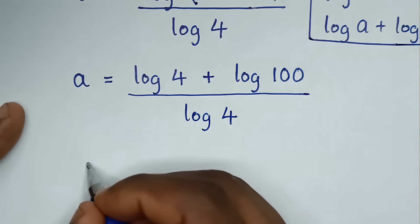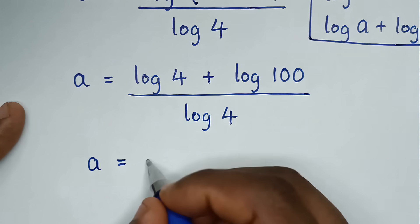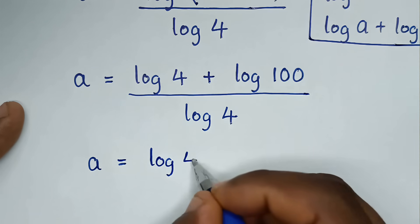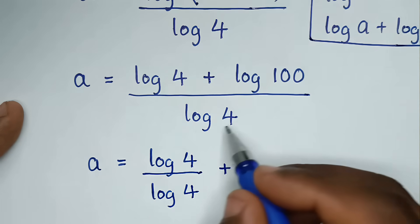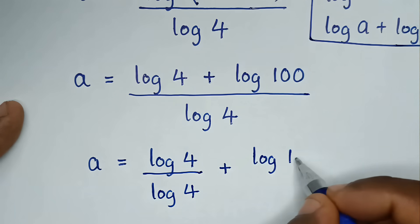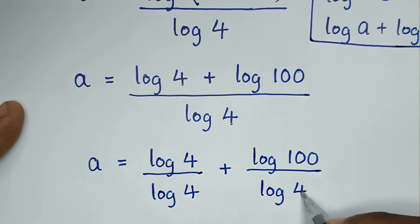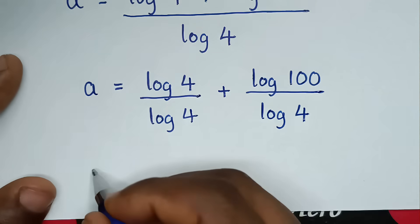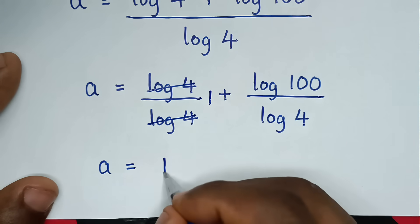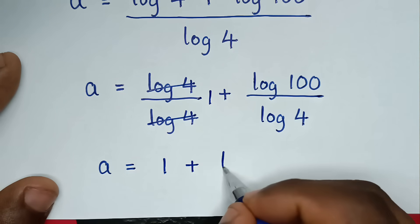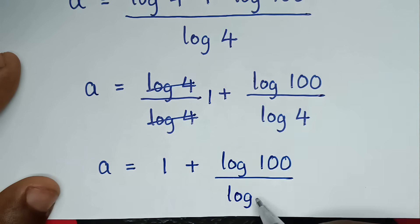Then in the next step, we will divide by log of 4 in here and here, so it will be log of 4 over log of 4, then plus log of 100 over log of 4. Then it will be a is equal to log of 4 divided by log of 4, which is 1. So it will be 1 plus log of 100 over log of 4.